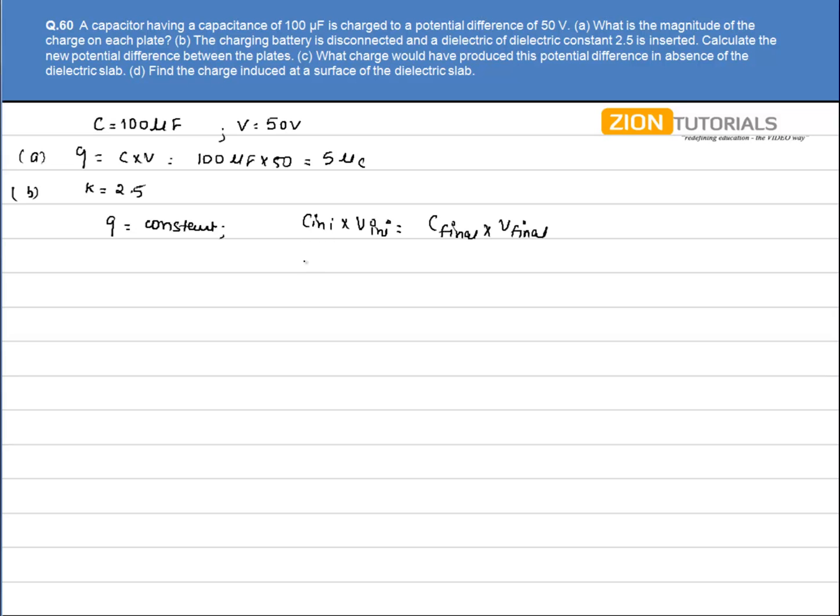C initial is given as 100μF. V initial is 50V. C final will equal KC, that is 2.5 times 100μF. So this 100μF will cancel from both sides. We have V final equals 50 divided by 2.5, which gives 20V. That is the answer.